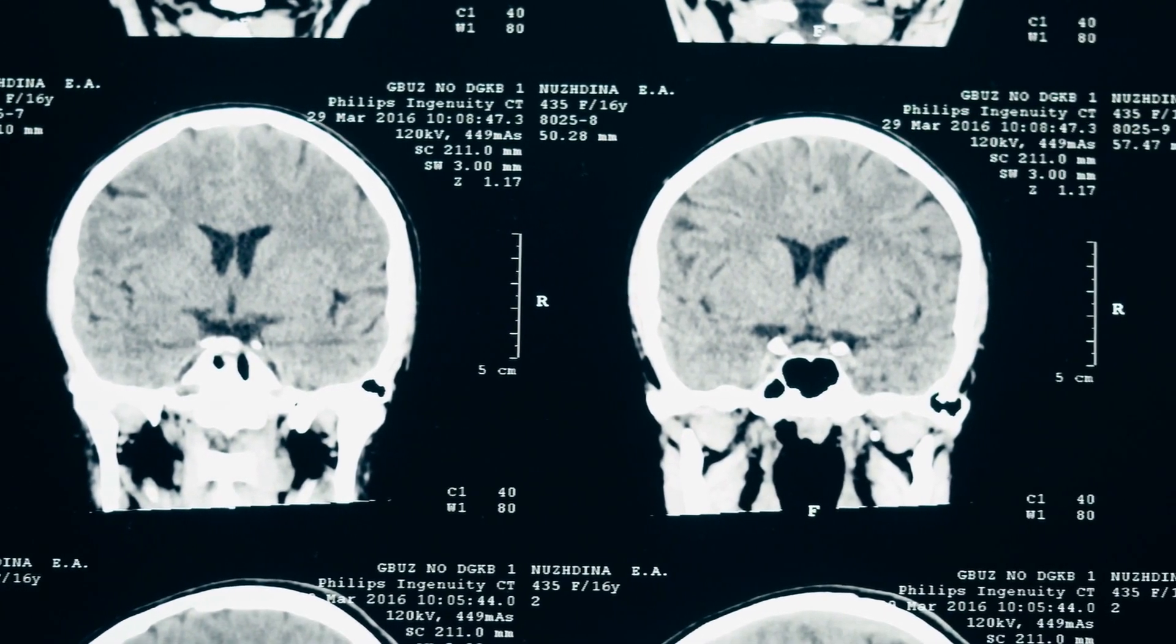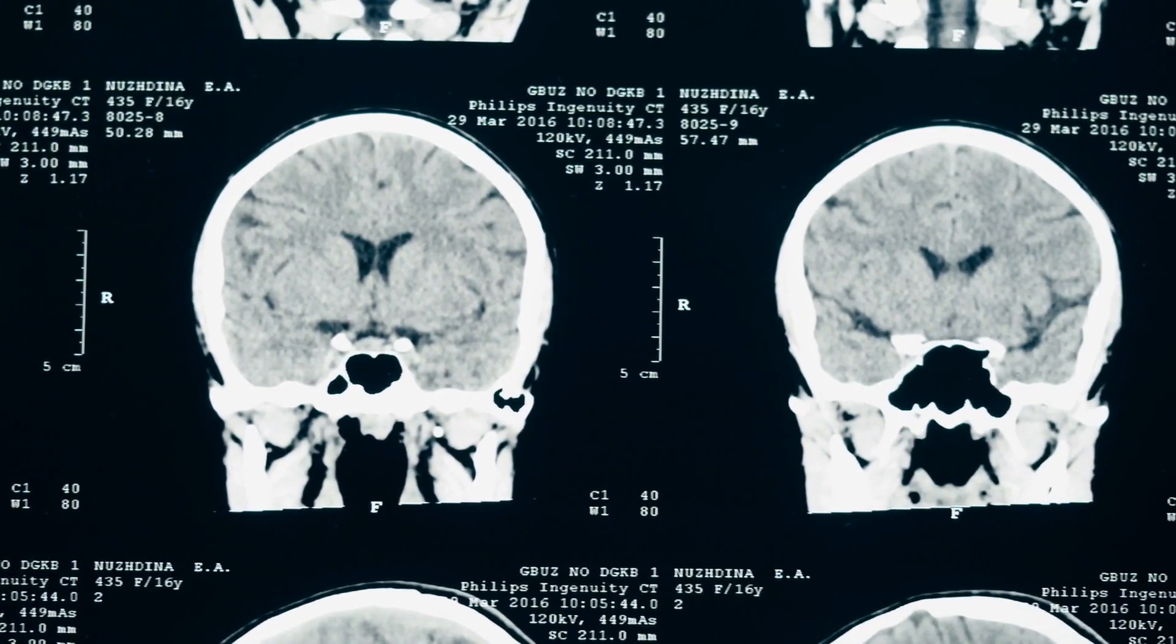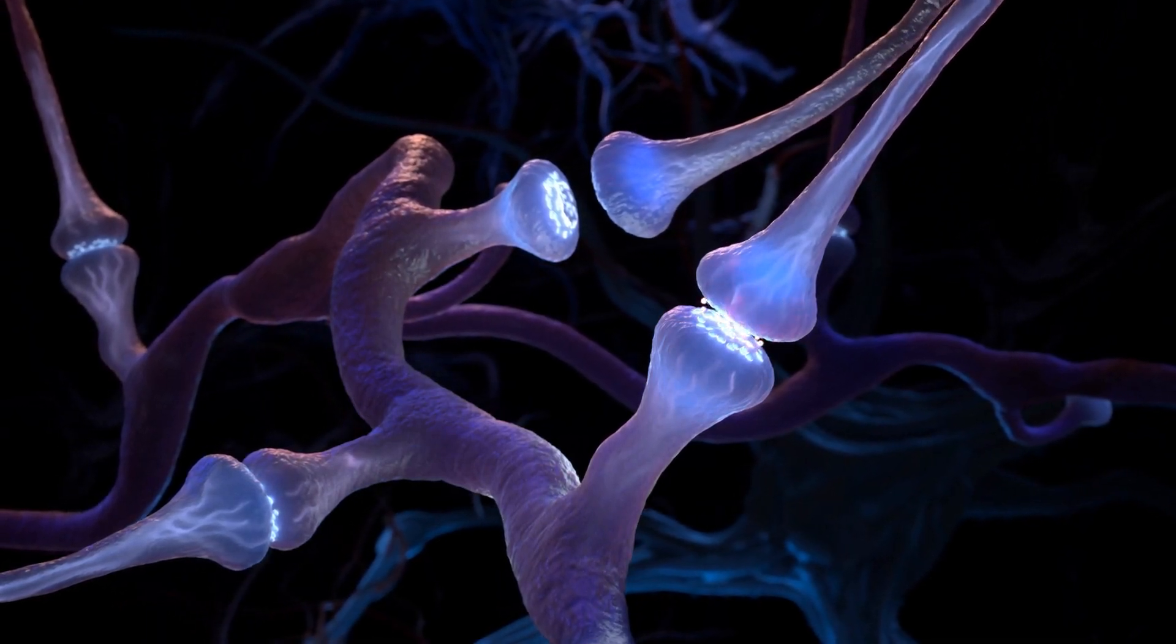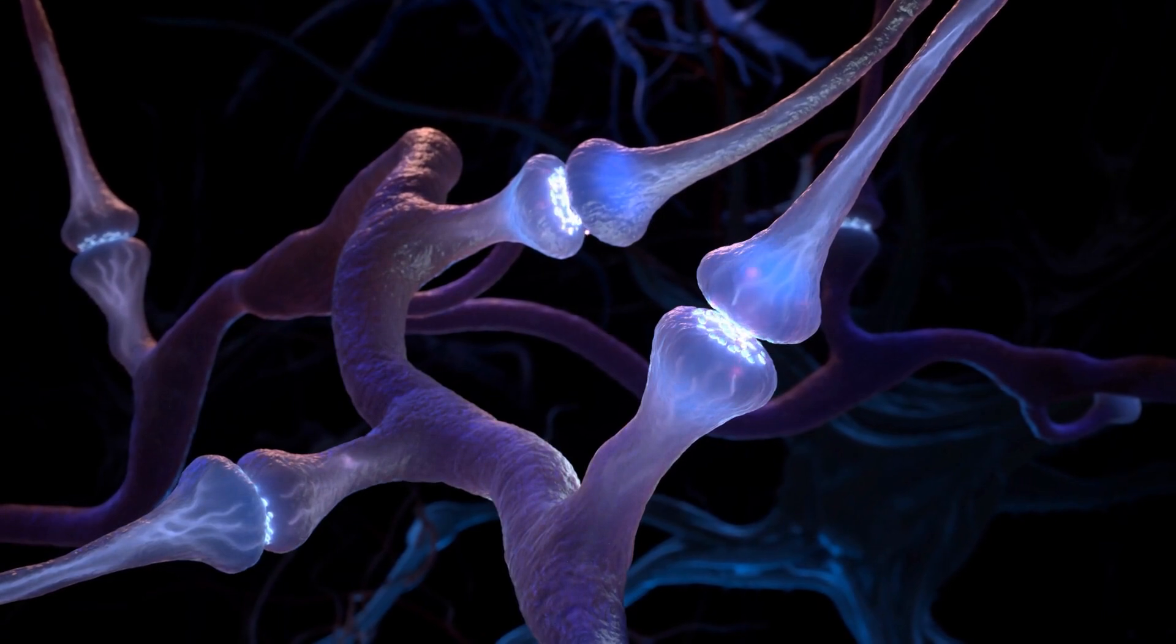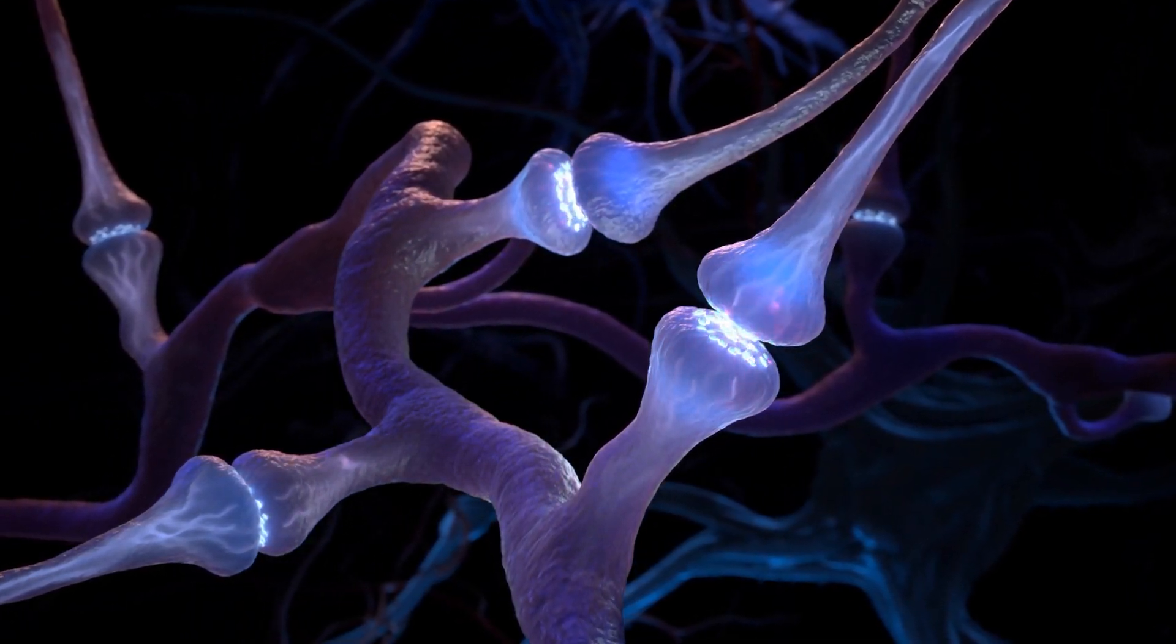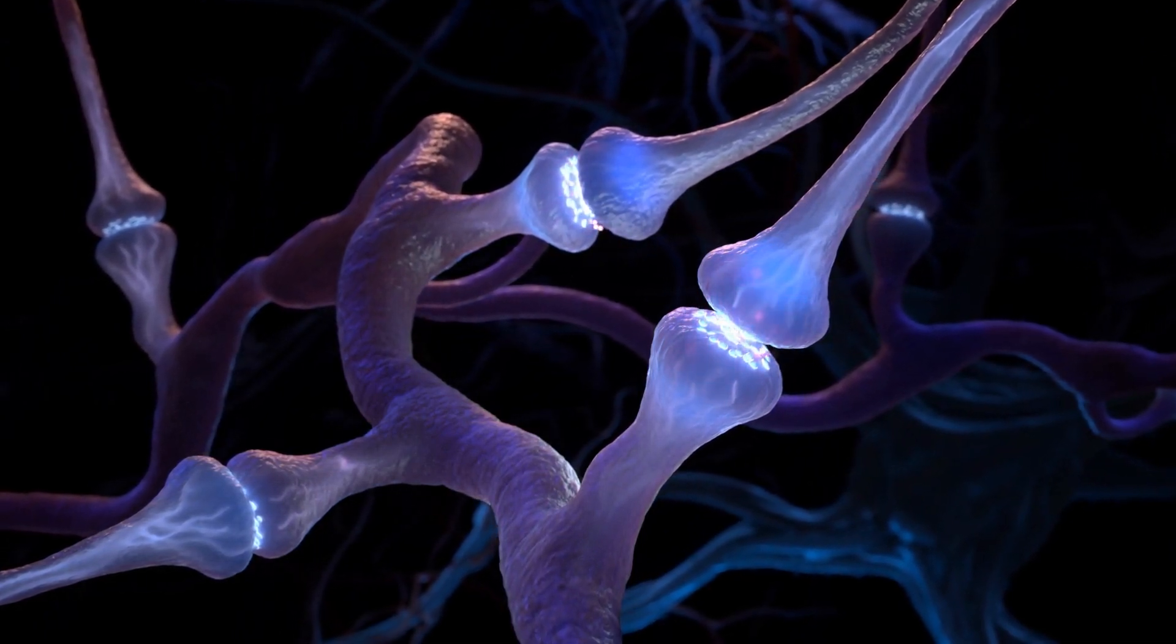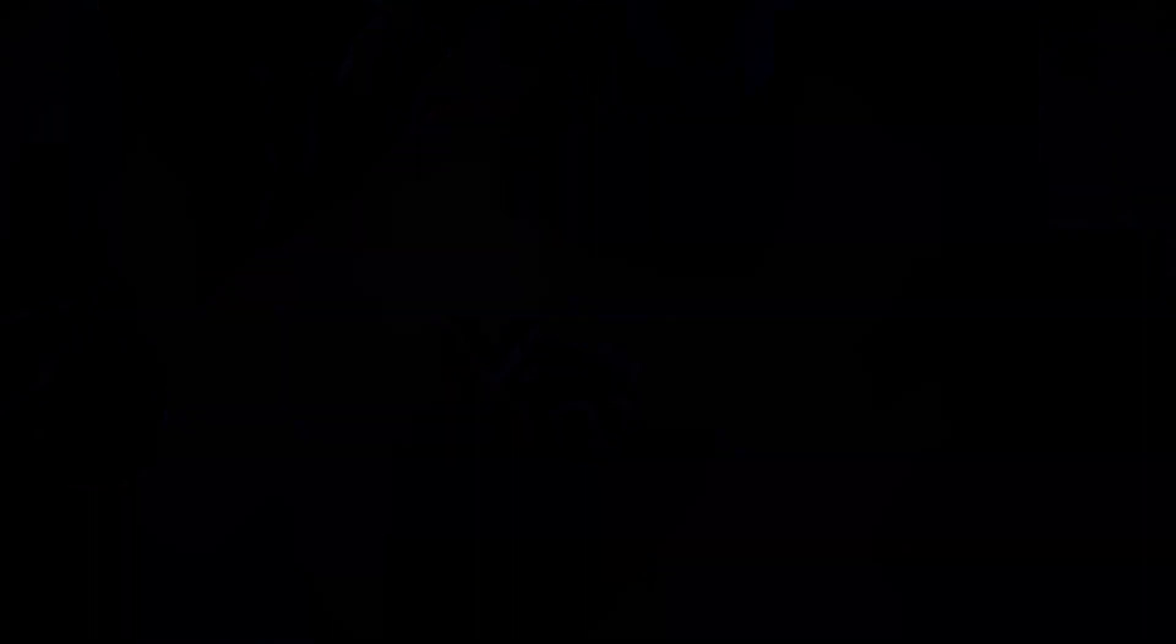Neuralink's first patient, Nolan Arbor, underwent successful implantation of 64 Neuralink threads. These threads transmitted a total of 1,024 individual electrodes directly to his brain cortex, a procedure performed in late January 2024. By February, 85% of these threads had retracted from the brain. They fell out.